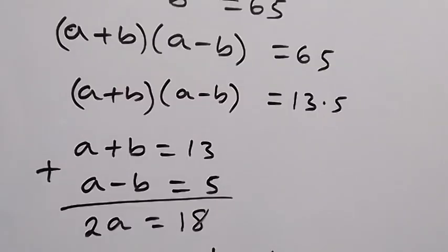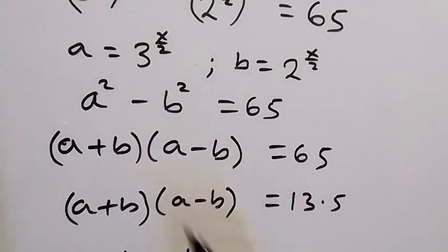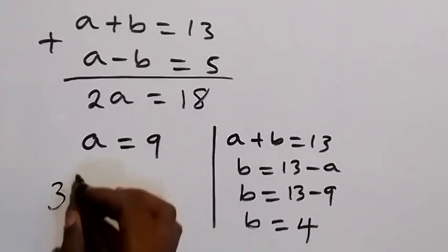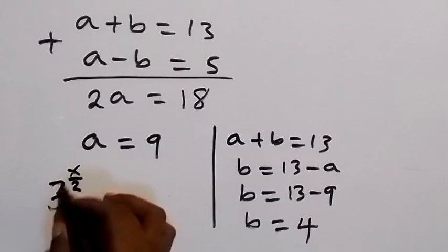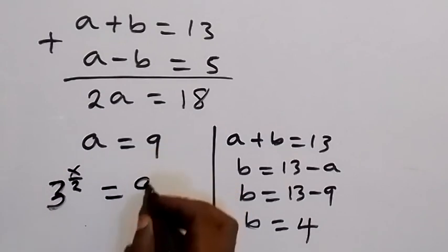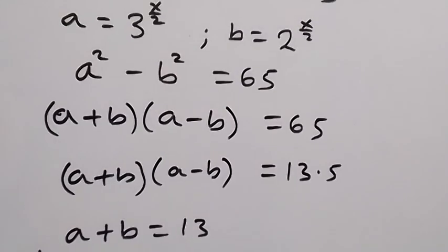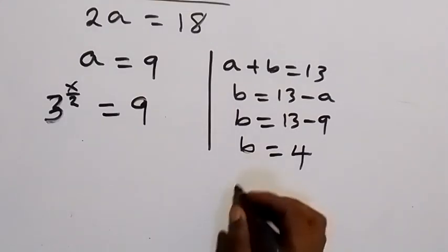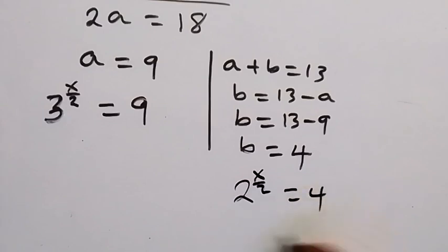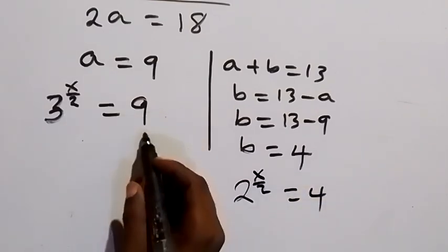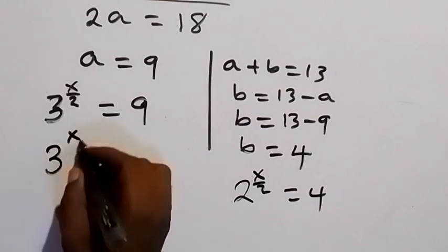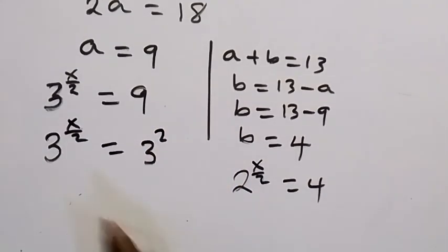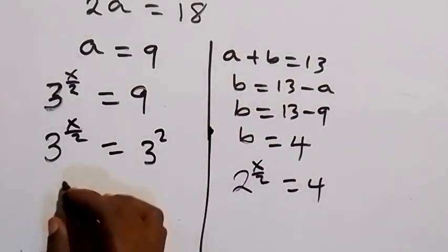Recalling our substitutions, a = 3 raised to power x over 2, so 3 raised to power x over 2 equals 9. Also, b = 2 raised to power x over 2, so 2 raised to power x over 2 equals 4. We write 9 as 3 squared, giving 3 raised to power x over 2 equals 3 squared.